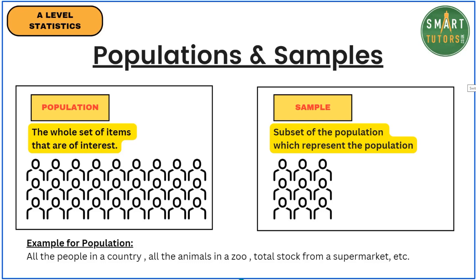What is the one-sentence definition for population? The whole set of items that are of interest. Even though you may not record data from every single item, the whole set of items is called the population. A sample is a subset of the population which represents the population — that is very important.